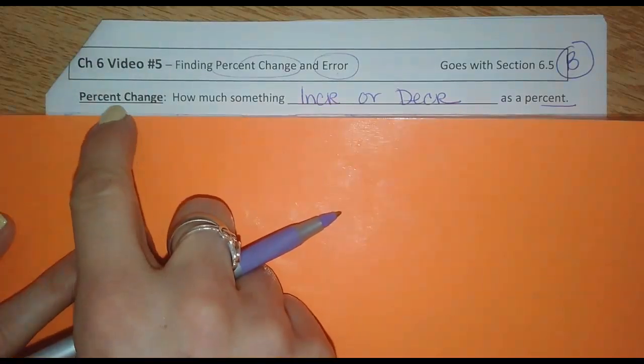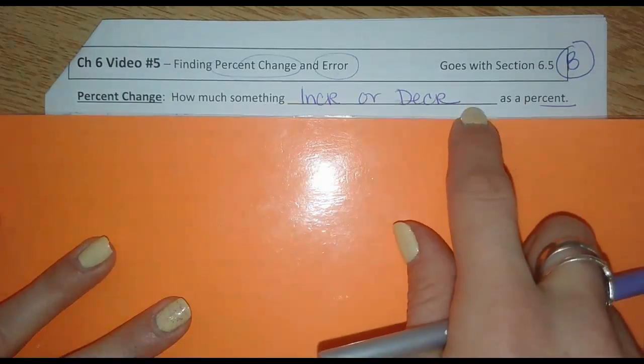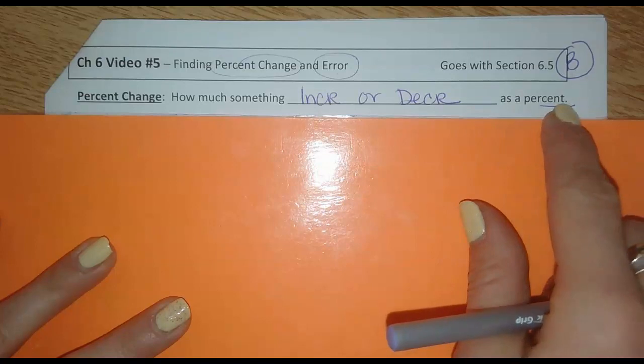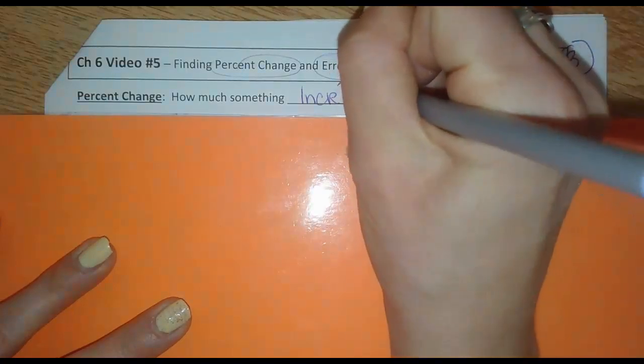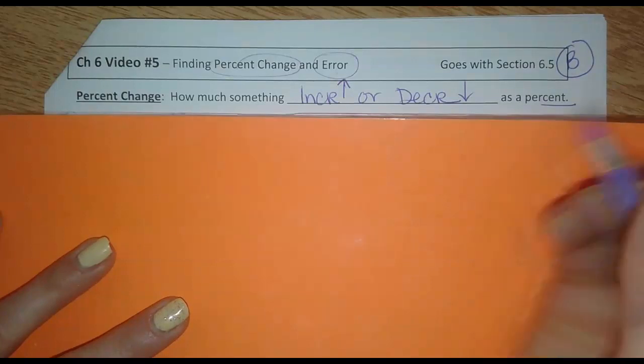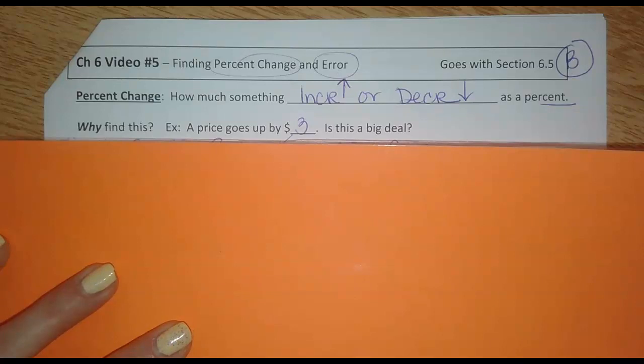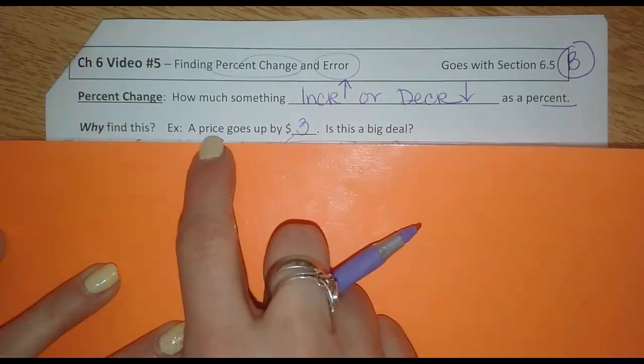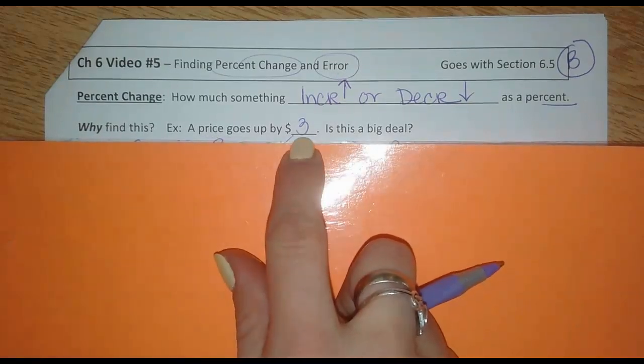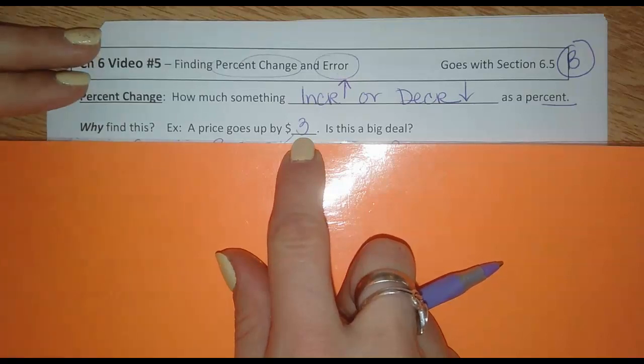In this section, we're finding percent error and percent change, and they both have their own formulas or way of setting them up. Let's start with percent change. The percent change is how much something increases or decreases, written as a percent. So why do we find this? Why do we need to find how much it changes as a percent? Well, let's say the price of an item goes up by $3. Is that a big deal? Three extra dollars onto the price of something? Let's look at two different cases.